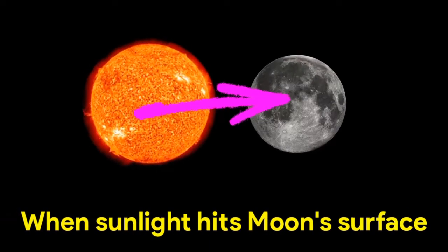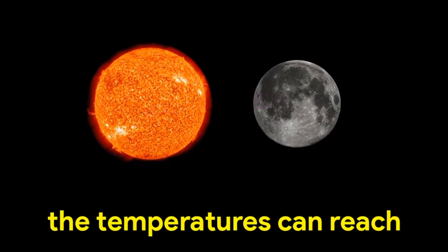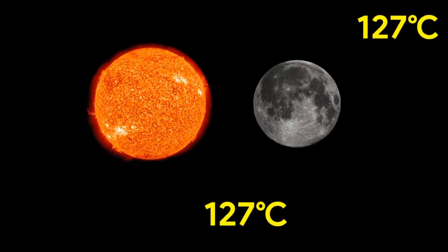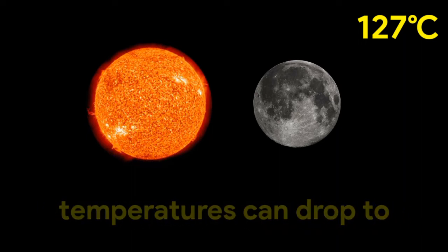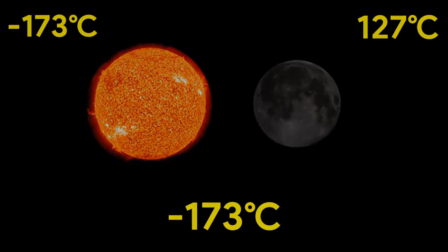When sunlight hits Moon's surface, the temperature can reach 127 degrees Celsius. When the Sun goes down, temperatures can drop to minus 173 degrees Celsius.